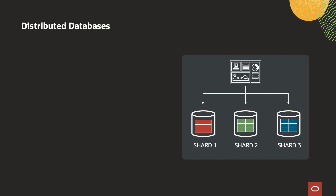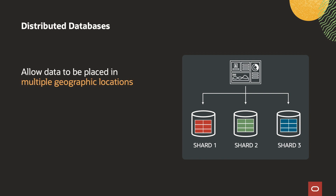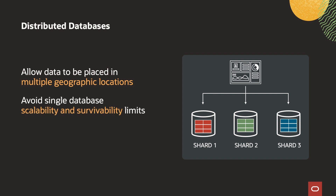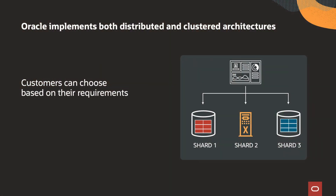In contrast, distributed databases distribute data across multiple physical databases, allowing data to be placed in multiple geographic locations. A big benefit is that it avoids single-database scalability and survivability issues since databases are independent of each other. The trade-off is that it works best when most data access is local to a shard. Requests that access data across shards will have higher latency and lower throughput than in a tightly coupled cluster. Oracle implements both architectures and allows customers to choose based on their requirements, or combine both to achieve the best of both worlds.